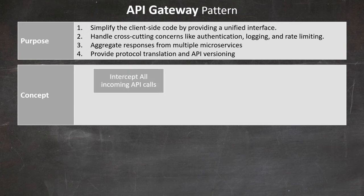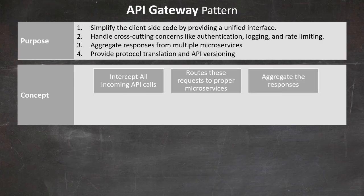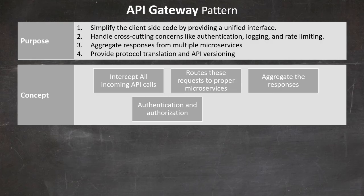The API Gateway acts as a reverse proxy, intercepting all incoming API calls from clients. It then routes these requests to appropriate microservices, aggregates the responses, and returns them to the client. The Gateway can also perform additional functions such as authentication and authorization, request and response transformation, caching, monitoring and analytics, and rate limiting and throttling.